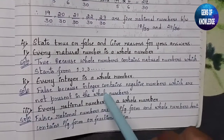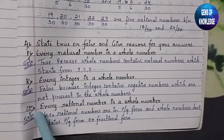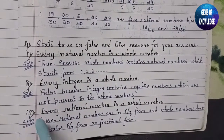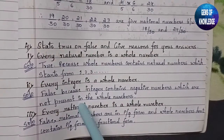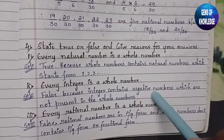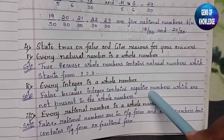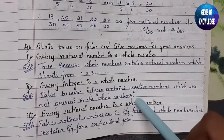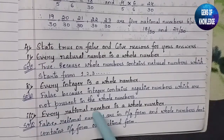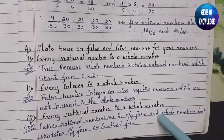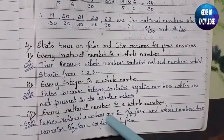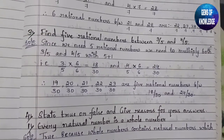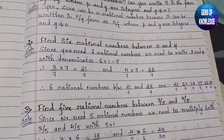Third: every rational number is a whole number. This is also false, because rational numbers are written in the form p/q, meaning they can be fractions. Whole numbers do not contain any fractions — they are not in p/q form. So rational numbers are in the form p/q, but whole numbers do not contain any fractional form. This was Exercise 1.1 — I hope everything is clear.